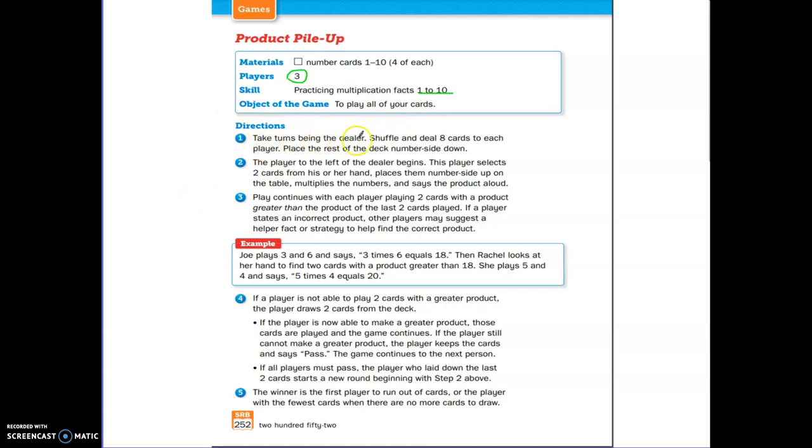Let's go over the directions. You're going to take turns being a dealer. Shuffle and deal eight cards to each player, and then put the rest of the deck number side down. The player to the left of the dealer begins. This player selects two cards from your hand and places them number side up on the table. You multiply the numbers and say the product aloud. So for example, right down here, Joe plays a 3 and a 6. Joe needs to multiply those and he says 3 times 6 equals 18.